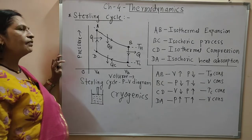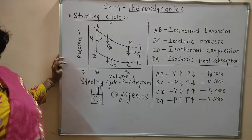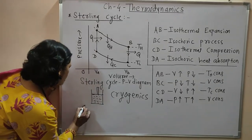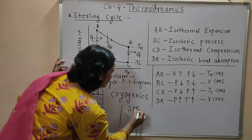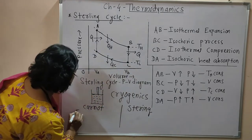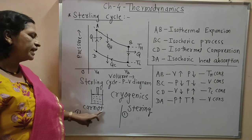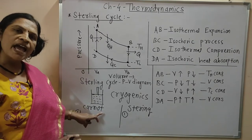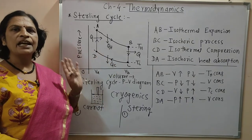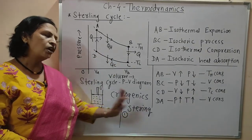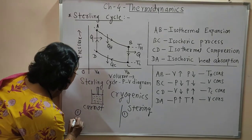Now we will distinguish the Carnot cycle and Stirling cycle. The first difference: the Carnot engine or Carnot cycle is imaginary — it is a hypothetical engine. The Stirling cycle, on the other hand, is a practical engine; it is actually working.